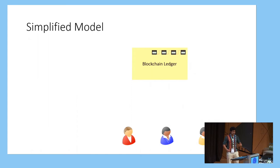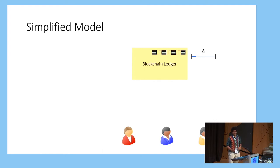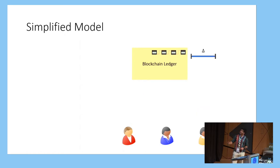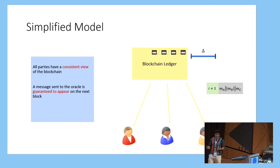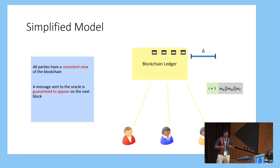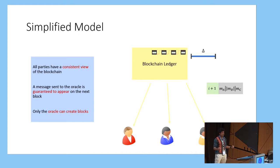So what is the model? The model assumes an oracle, which I call the blockchain oracle, and it also has an additional timer with some parameter delta — the average time blocks are created in a blockchain. Over time, parties send messages to the oracle, and after completion of this delta interval, the oracle collects all messages along with some identifying information and sends it back. We require certain properties: all parties have a consistent view, messages sent appear immediately on the next block, and only the oracle can create blocks. Again, this is a super idealistic version.